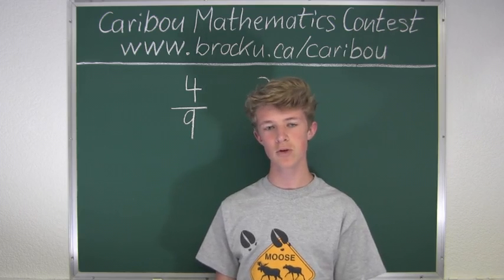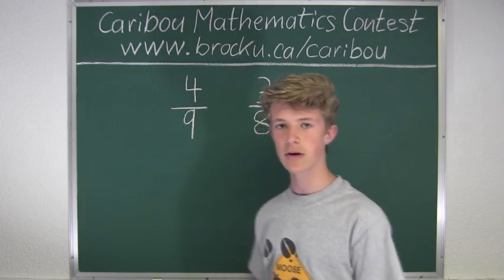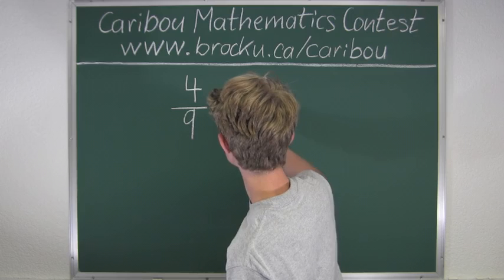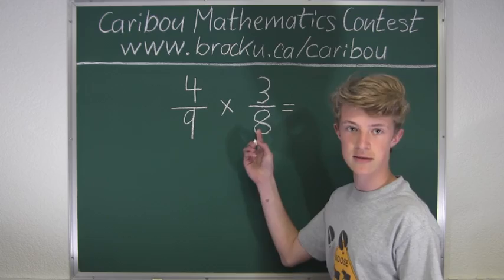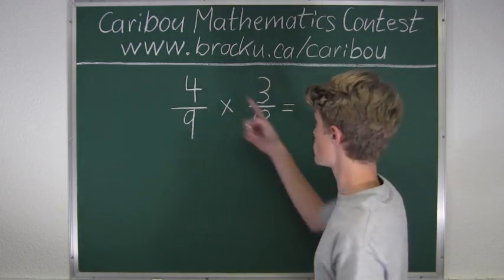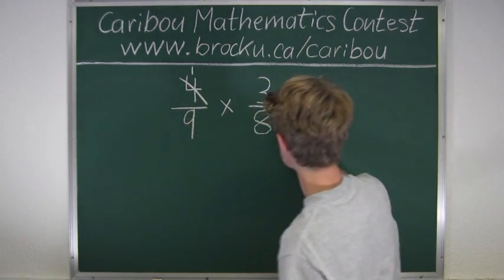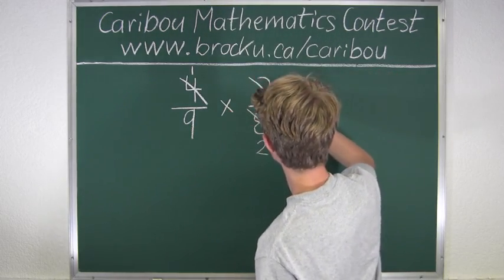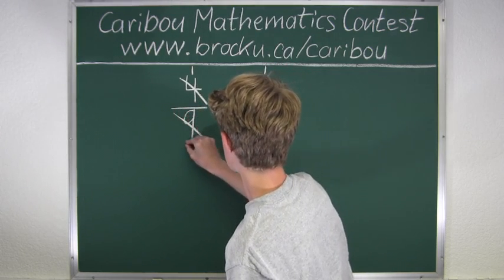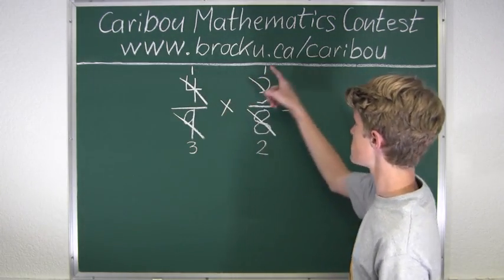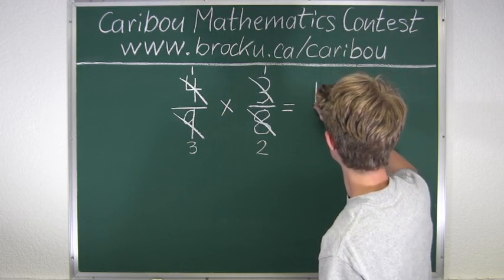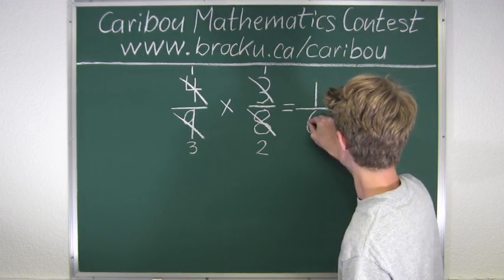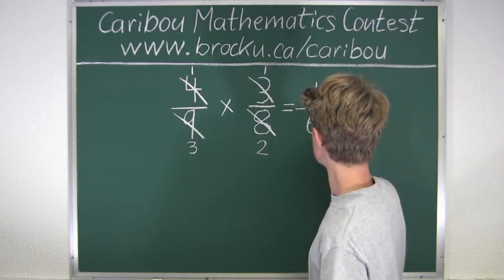So in our case, we would have to multiply 4 over 9 by 3 over 8. Now we cancel factors: 4 and 8 simplify to 1 over 2, and 3 over 9 simplifies to 1 over 3. So what we end up with is 1 times 1 equals 1, and 3 times 2 equals 6. The probability is 1 over 6.